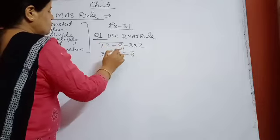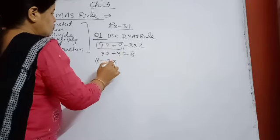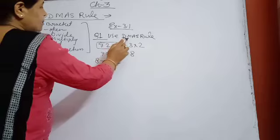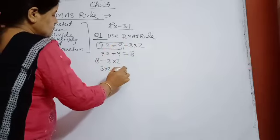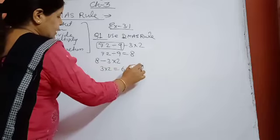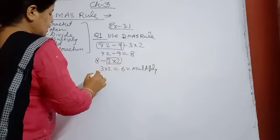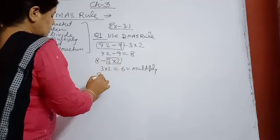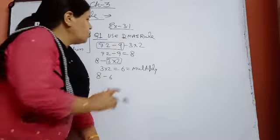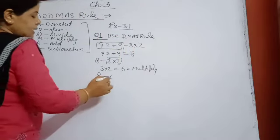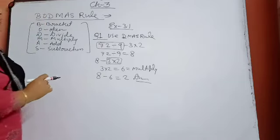In place of 72÷9, you write 8, minus 3 into 2. Next step is multiply, so 3 into 2 is equal to 6. In place of 3 into 2, write 6. Now we have 8 minus 6. Third operation would be addition, but here we don't have addition, so next operation is subtraction. 8 minus 6 is equal to 2 — that is your answer.